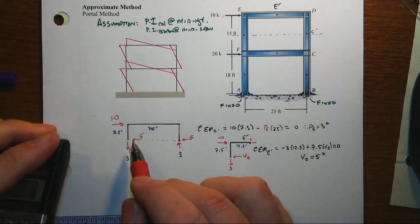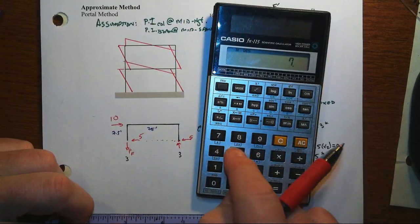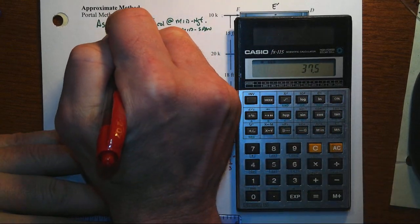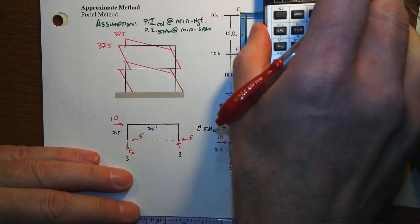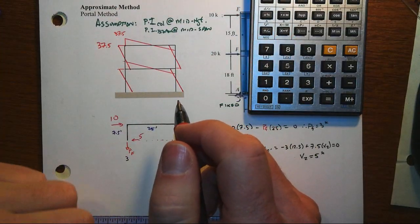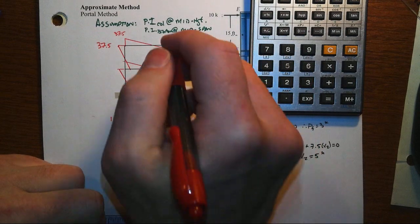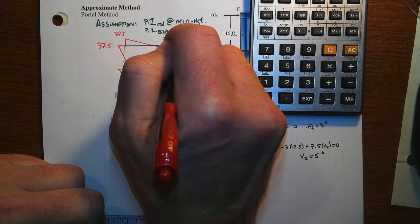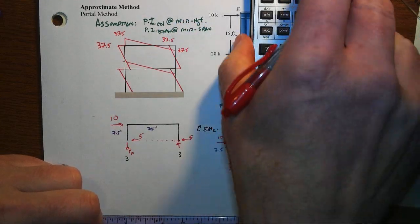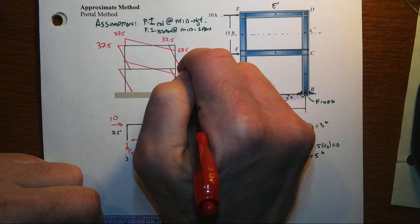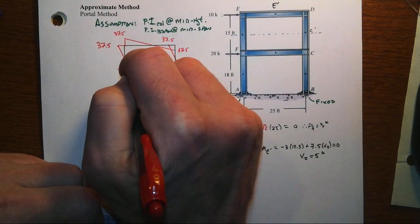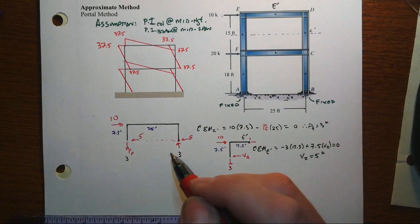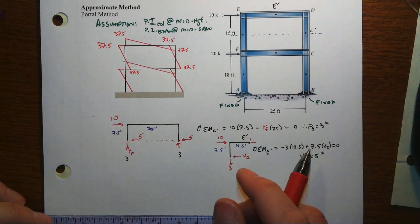Now, to get the moment at the top, of course, that's just going to be 5 times 7.5. That's the 37.5. And that's going to be the same. It's going to turn out to be as we go around the corner on the joint, same thing over here. We get negative 37.5 for the beam, 37.5 for the top of the column. And then the bottom of the column will also be 37.5 because we have the shear being at the mid-height. And so the moment arm is the same.